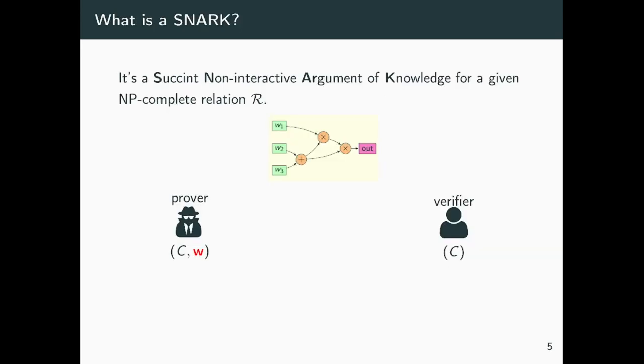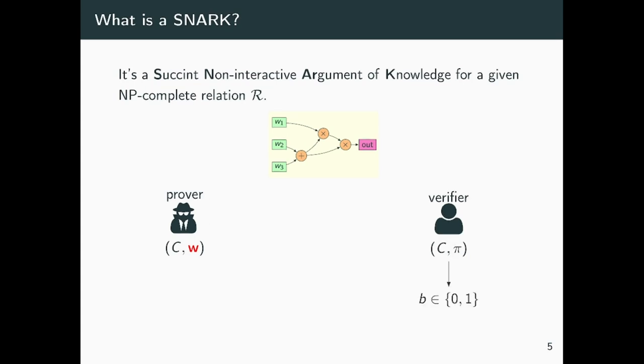So, provided the relation R, what is a SNARK? A SNARK is essentially a protocol through which a prover can convince a verifier that a given circuit they agreed on previously is satisfiable, by sending a proof. The verifier can then locally check this proof, and decide if the circuit is satisfiable or not.